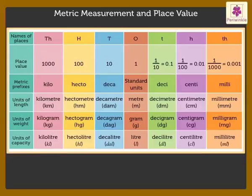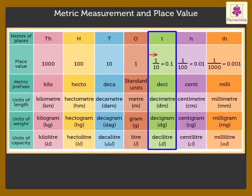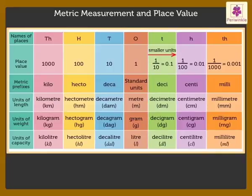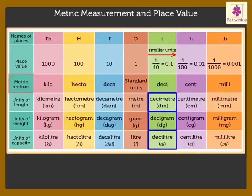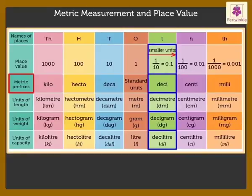Now let's move to the right of the ones column. The units in the tenths column are ten times smaller than, or one tenth of, the standard units. We name these as decimeter, decigram, and deciliter, as the prefix 'deci' means one tenth.